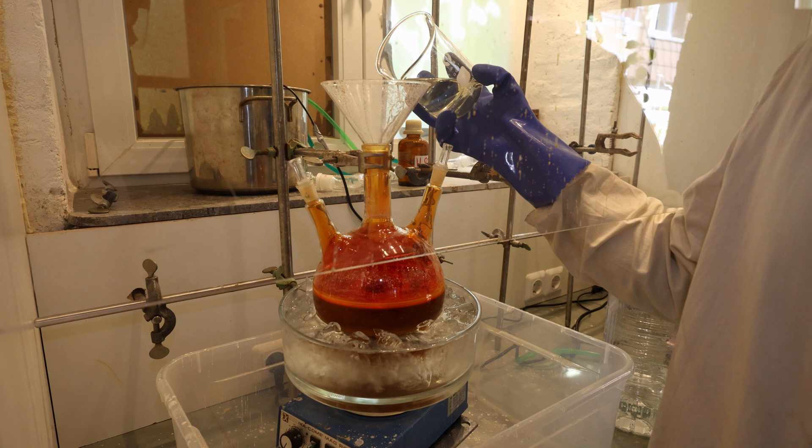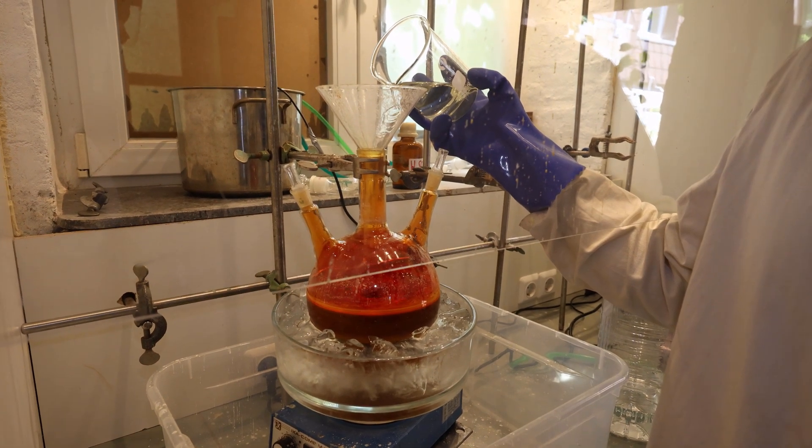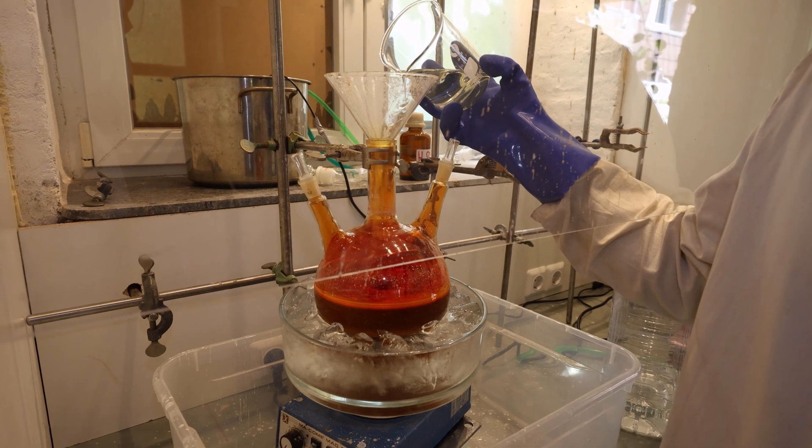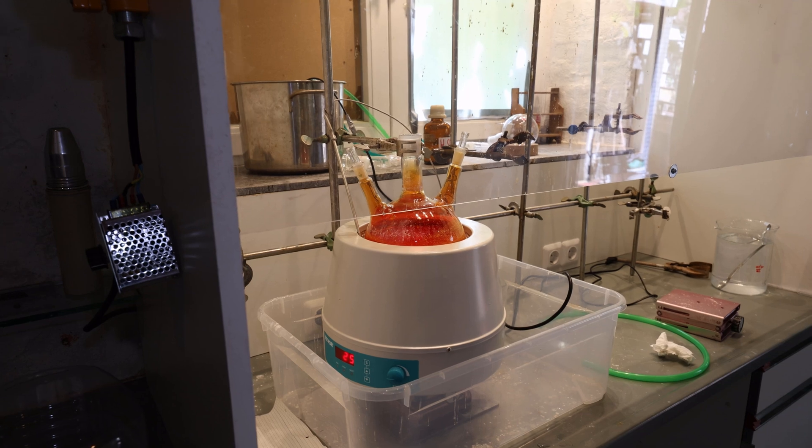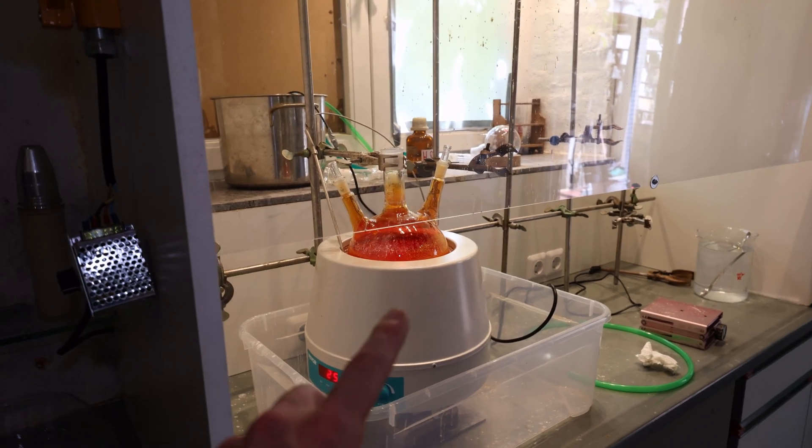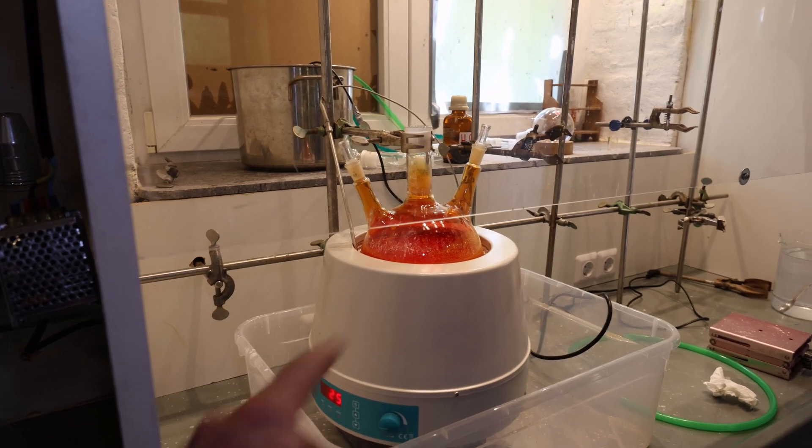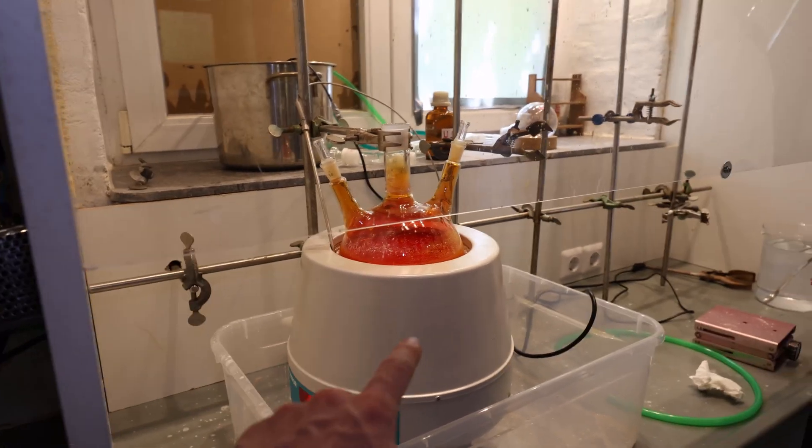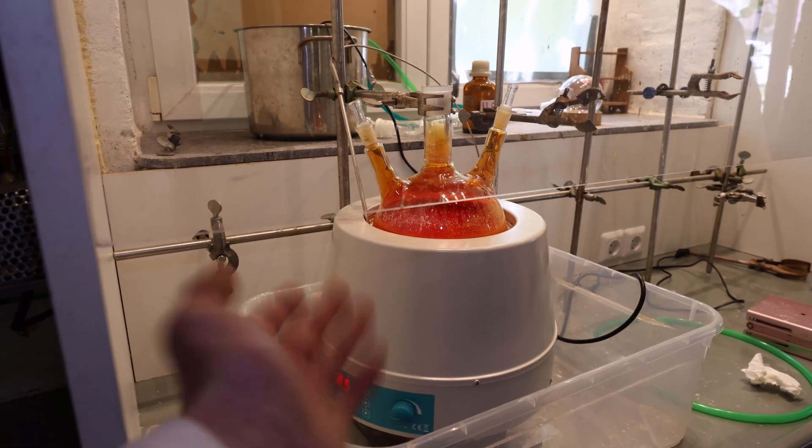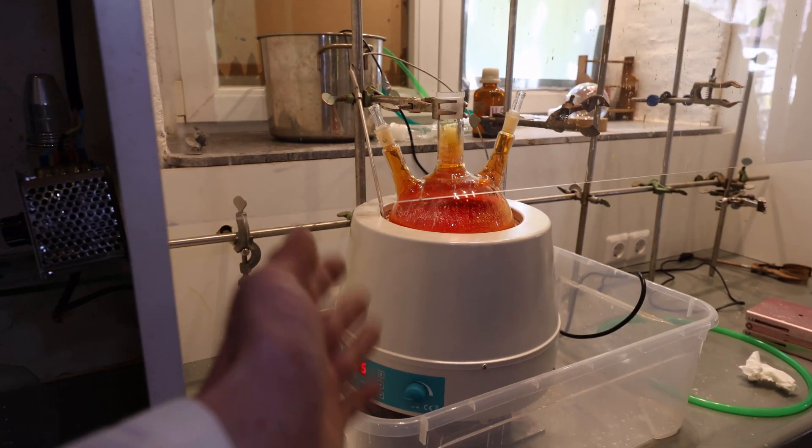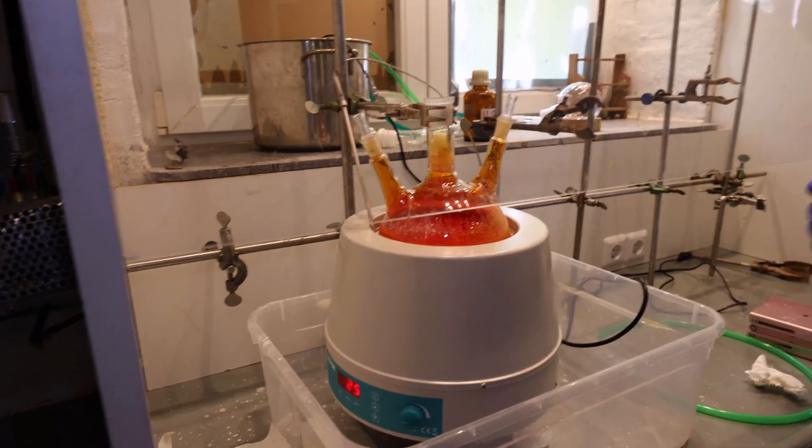Slowly adding the rest of the hydrochloric acid. We swapped the hot plate for a heating mantle. The hot plate was just for stirring because the stirring is not very strong on this one and better on the hot plate. This one is actually for heating now and now we're going to set up a distillation and distill over the bromine.